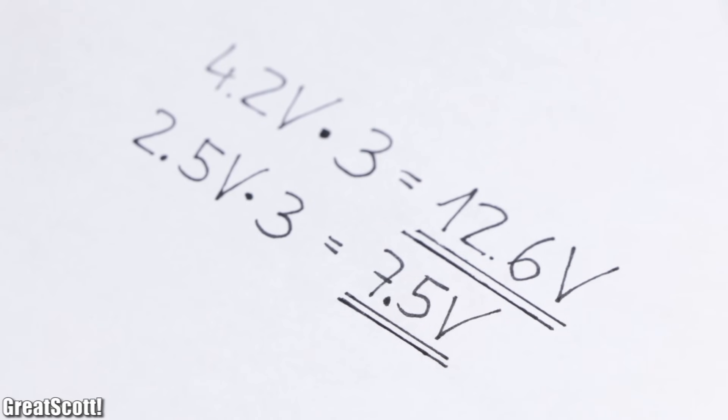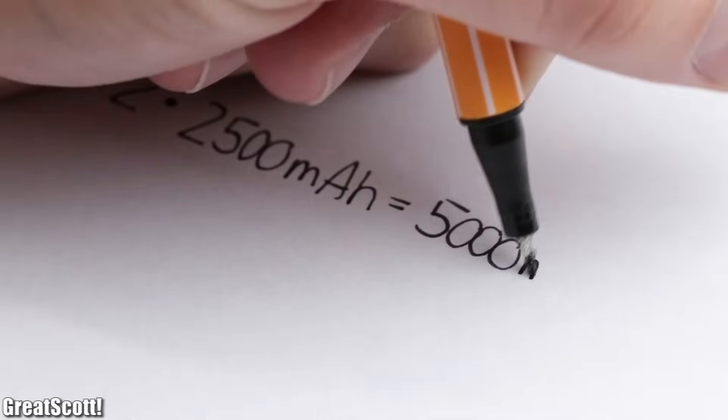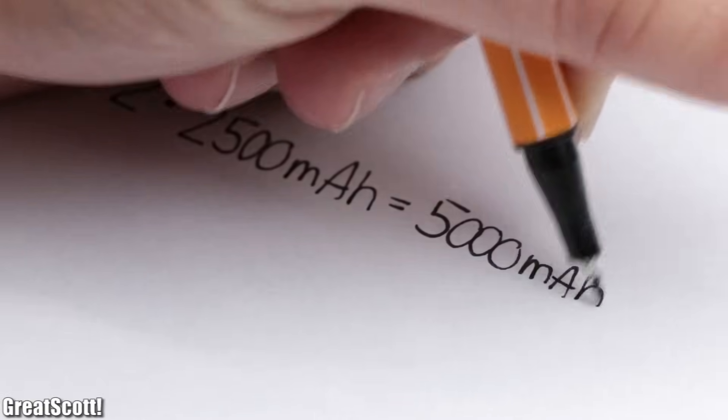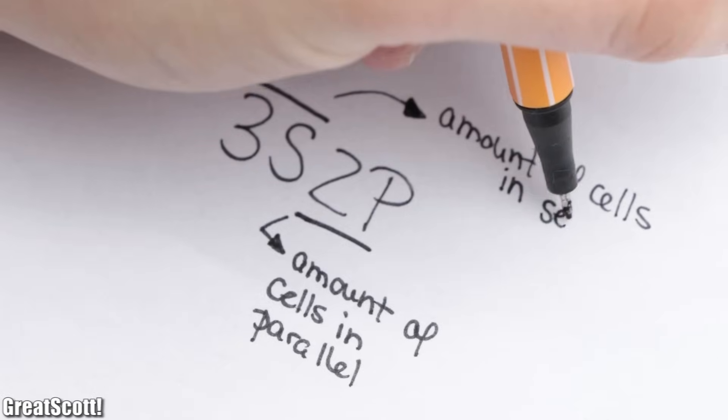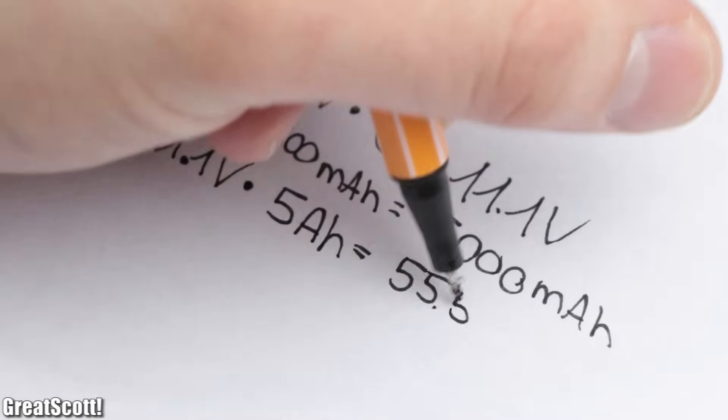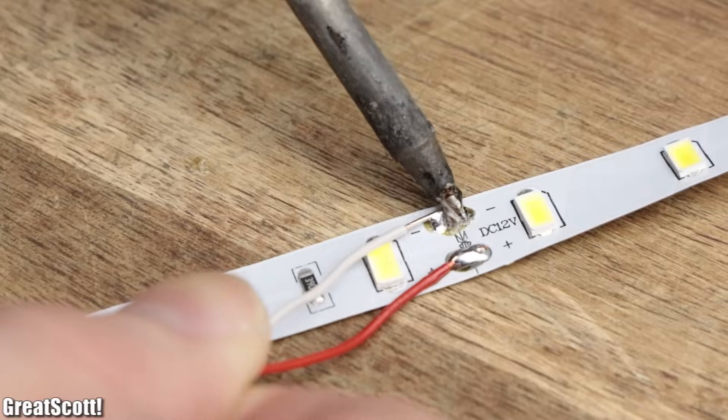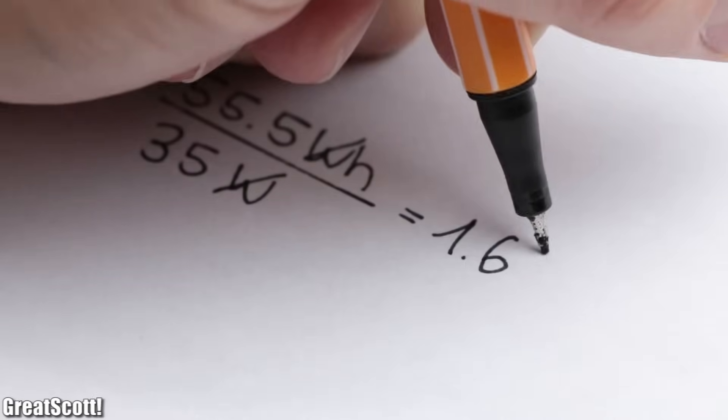In addition to that, I will add a second battery to each cell in parallel in order to double the overall capacity of the battery pack. So in the end we will have a 3s2p battery pack with an energy of 55.5 watt hours, enough to power five meters of the LED strip for 1.6 hours.